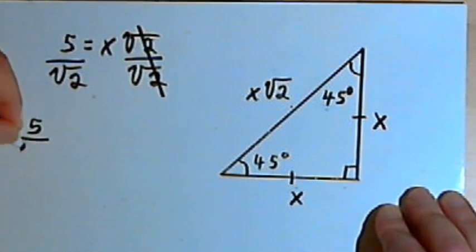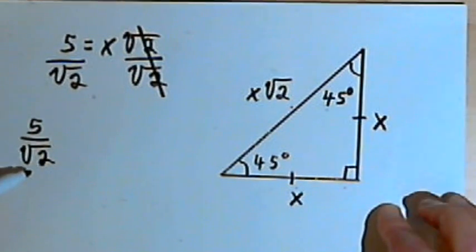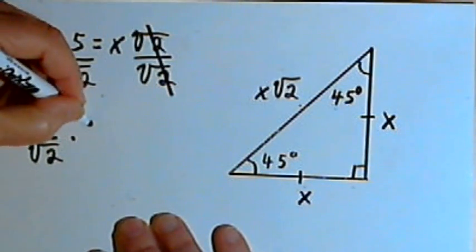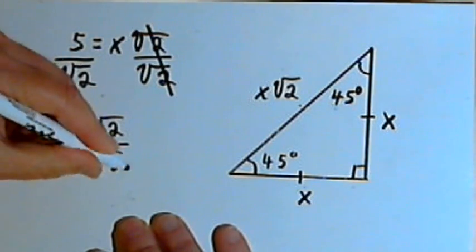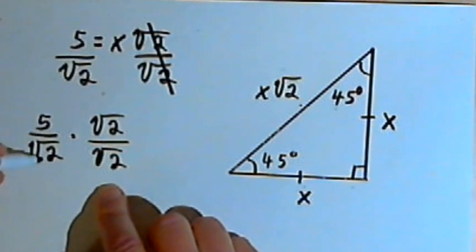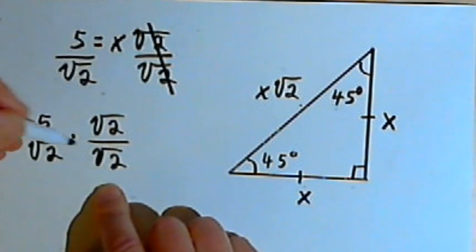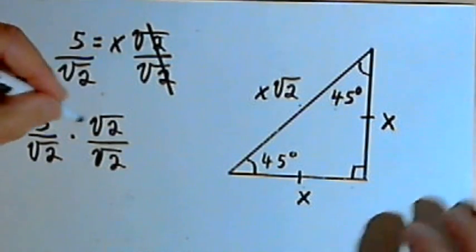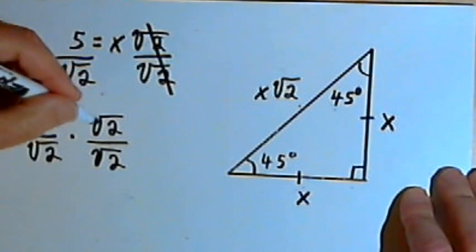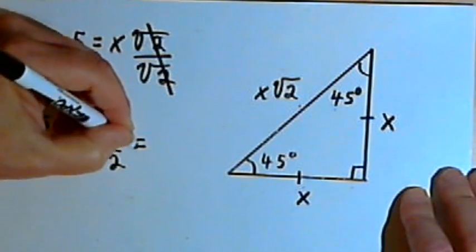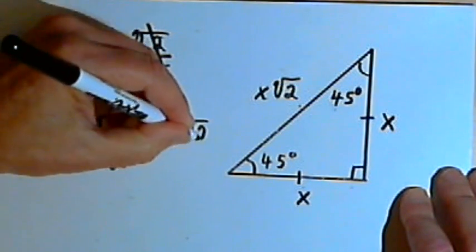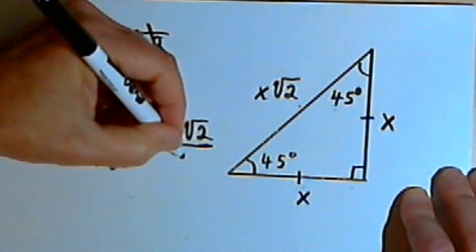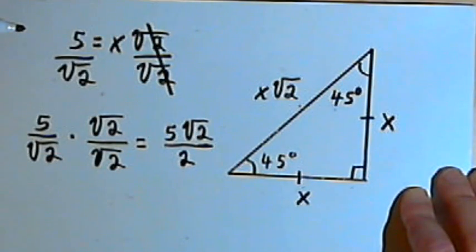If you're told not to leave a radical sign in the denominator, we use a process called rationalizing the denominator. For this problem, that means multiplying the fraction 5 over the square root of 2 by the square root of 2 over the square root of 2, which equals 1. Multiplying across gives a numerator of 5 times the square root of 2, and the denominator is the square root of 2 times the square root of 2, which equals 2. So x equals 5 times the square root of 2 over 2.